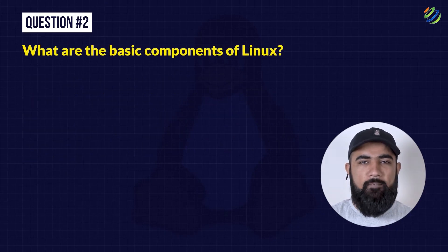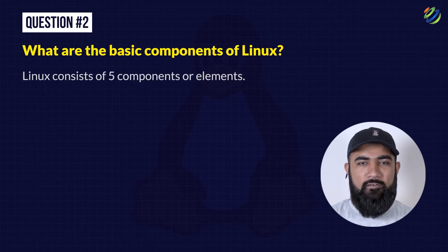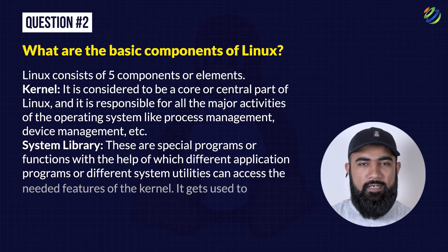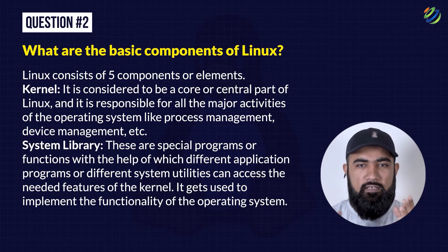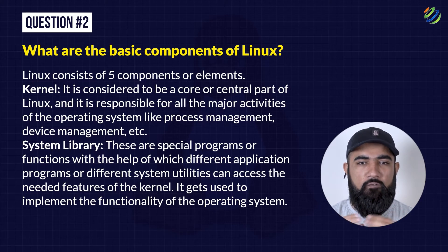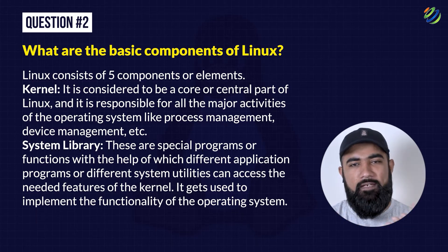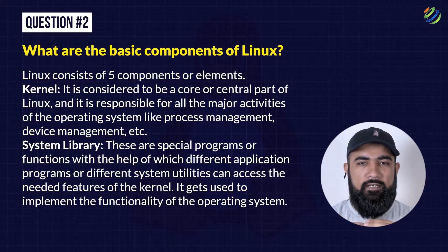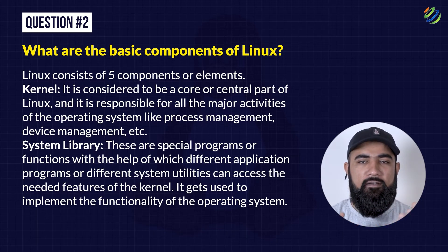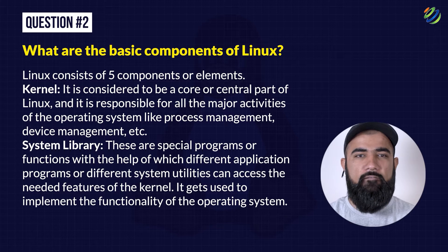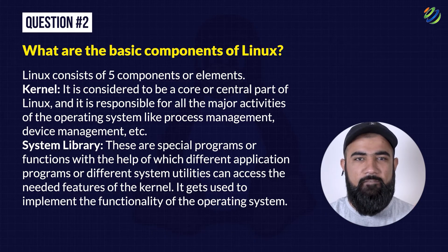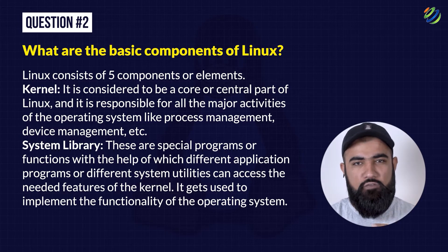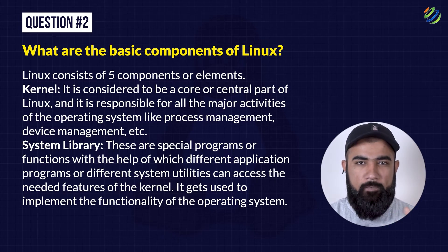Question 2: What are the basic components of Linux? Linux consists of five components. First, the Kernel — it is considered the core or main part of Linux and is responsible for all major activities of the operating system, like process management, device management, etc. Second, System Library — these are special programs or functions with the help of which different application programs or system functions can access the needed features of the kernel. It is used to implement the functionality of the operating system.